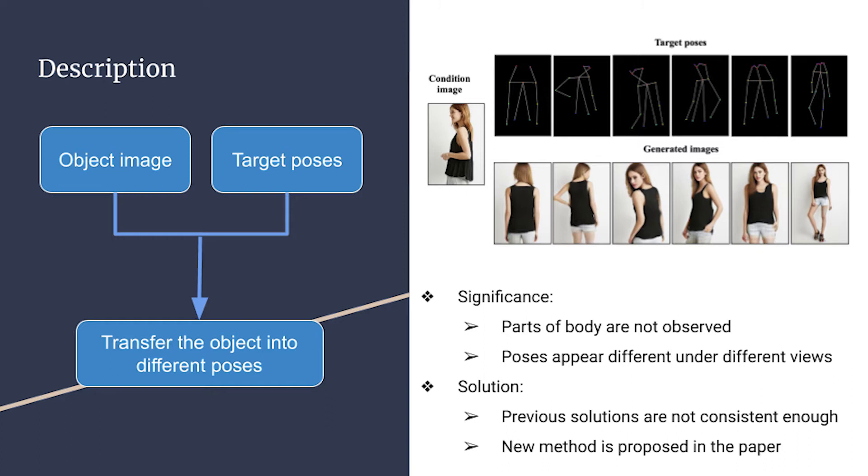Pose transfer refers to transferring an object into different poses given the object's image and a series of target poses. This is a challenging task because some body parts are not observed in the conditioning image and poses can appear differently under different views.